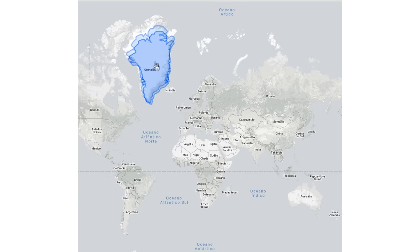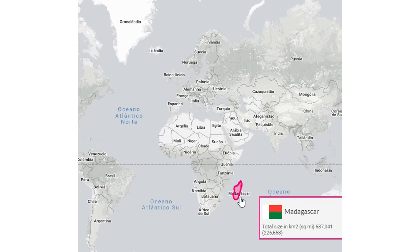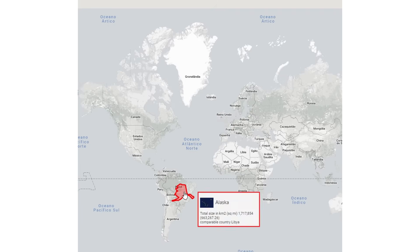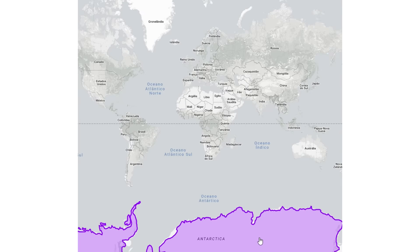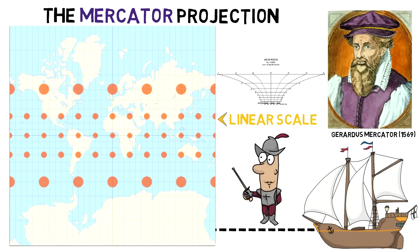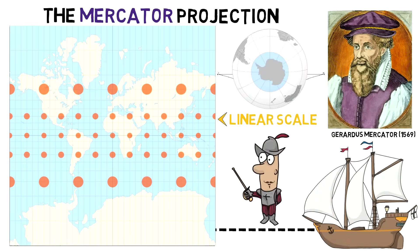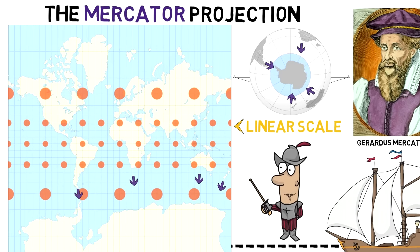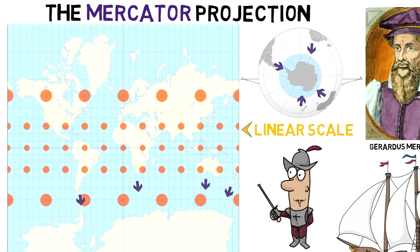Greenland appears to be the size of Africa, when in reality it is 14 times smaller. Madagascar looks the same size as the UK, when in fact it is twice its size. Alaska seems to be the same size as Brazil, when Brazil is 5 times bigger. Antarctica looks gigantic, when in reality it is reasonably small — it's just at the southern pole, and so is reachable on a globe from all surrounding areas, depicted here on the southern part of the map. In order to depict that reachability, the map must show it distorted like this.